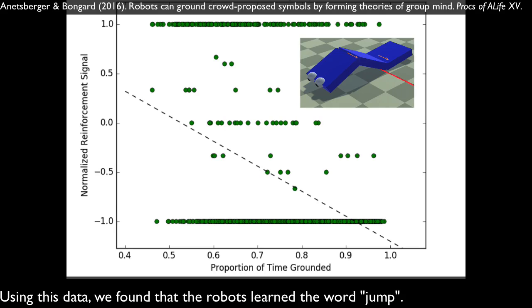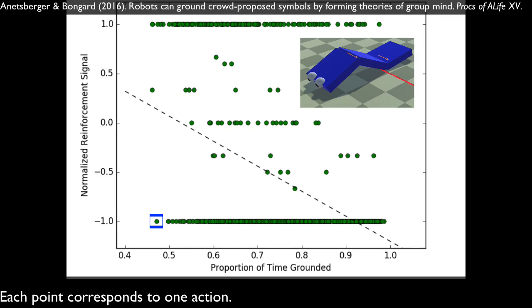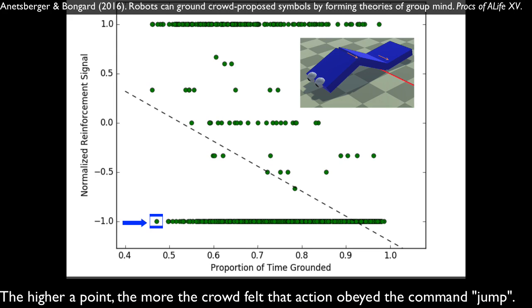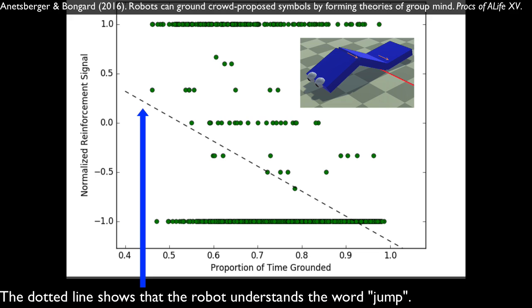Using this data, we found that the robots learned the word jump. Each point corresponds to one action. The horizontal position of each action shows how long the robot spent on the ground. The higher a point, the more the crowd felt that action obeyed the command jump.